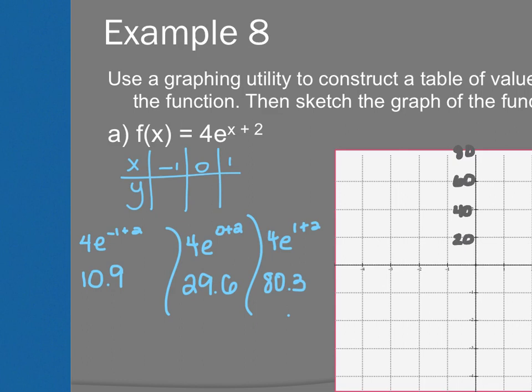Negative 1 is 10.9, 0 is 29.6, and 1 is 80.3. Now if I just connect what's there, I lose that exponential shape. Remember this is still an exponential function which means it's going to come close to without touching my horizontal asymptote and because this doesn't have a vertical shift, I know my horizontal asymptote is at 0. So all the same characteristics of an exponential function still apply, it's just that the base is like 2.7 on this one.